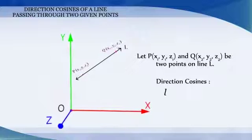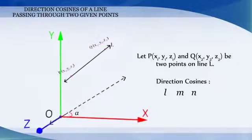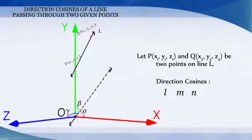Let l, m, n be the direction cosines of the line PQ and let it make angles alpha, beta and gamma with x, y and z axis respectively.